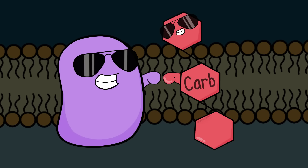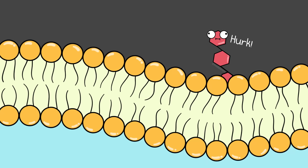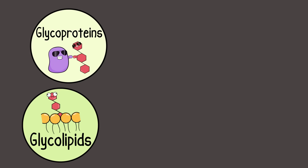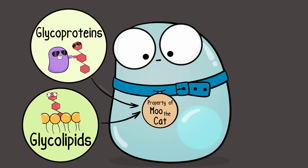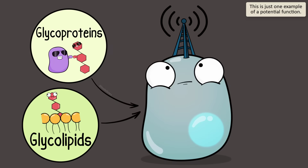Both protein types can have carbohydrates bound to them, making them glycoproteins. If carbohydrates attach to a phospholipid, you get what's called a glycolipid. Glycoproteins and glycolipids can identify the cell as belonging to the organism — self and non-self recognition — which is very important when fighting pathogens. They can also be involved in many kinds of cell signaling.